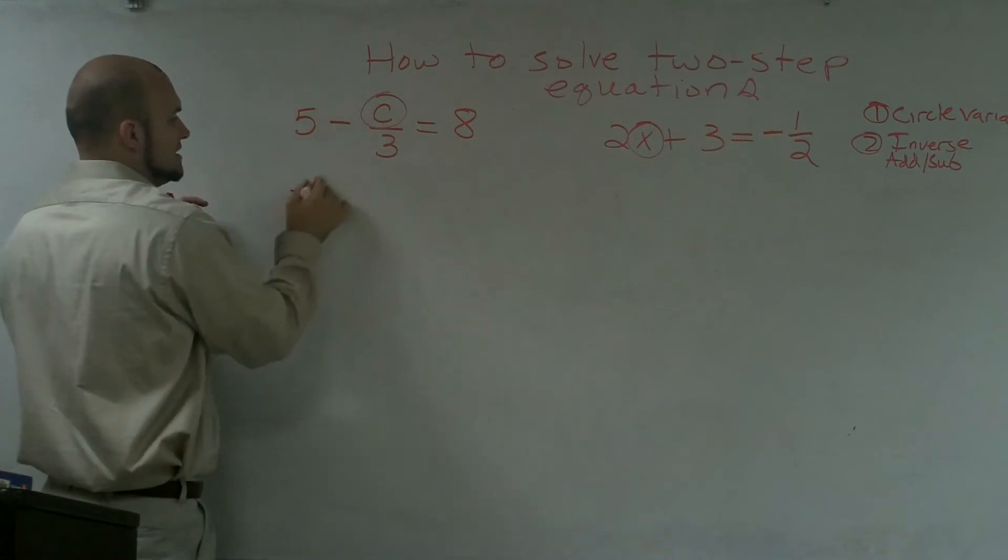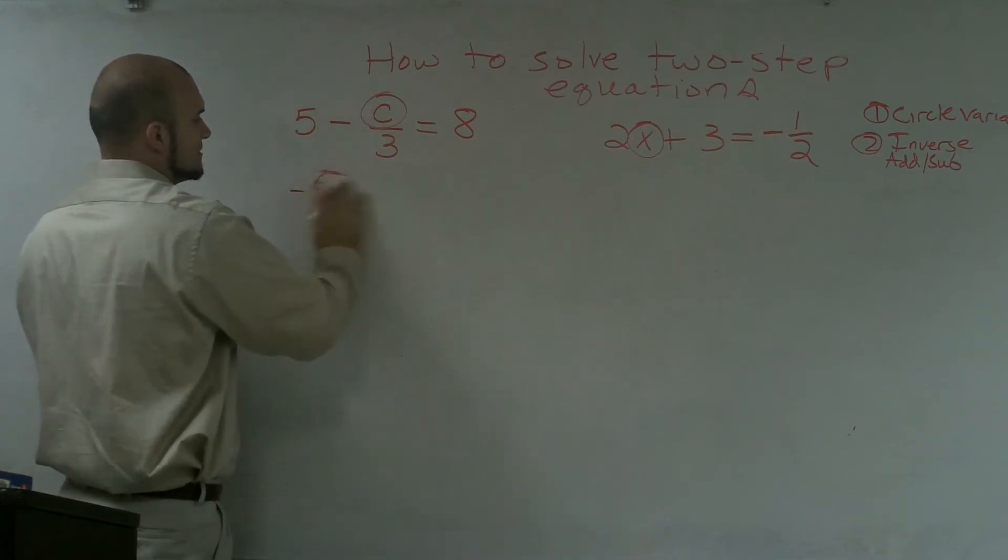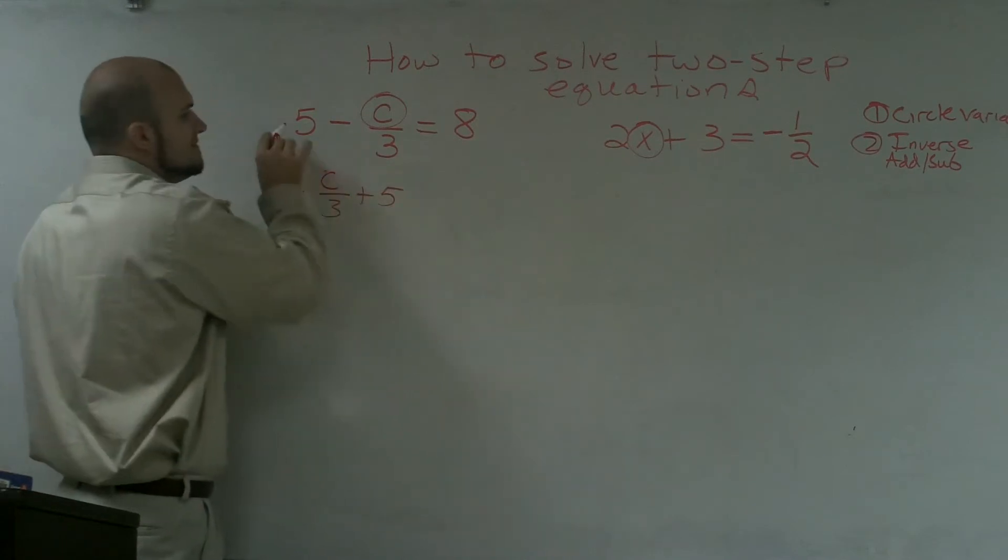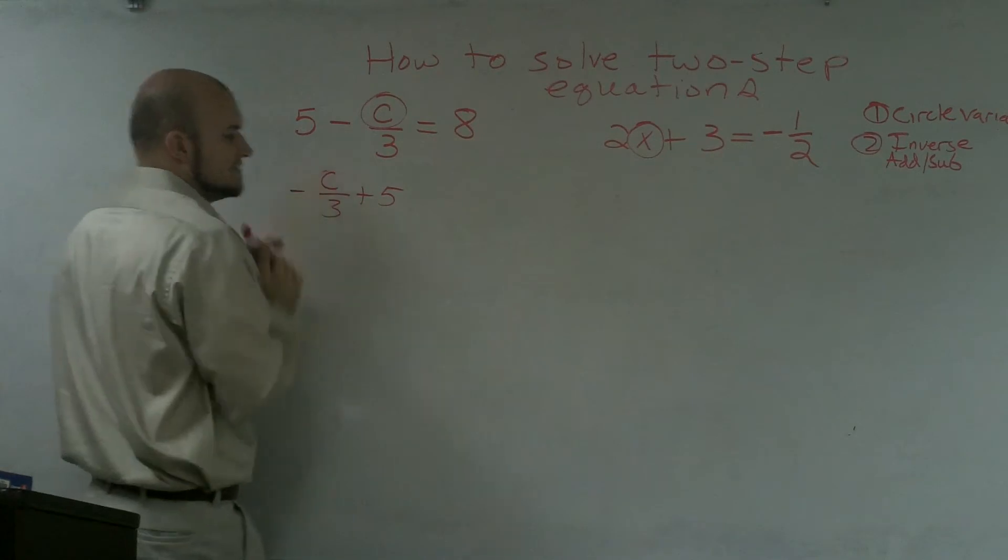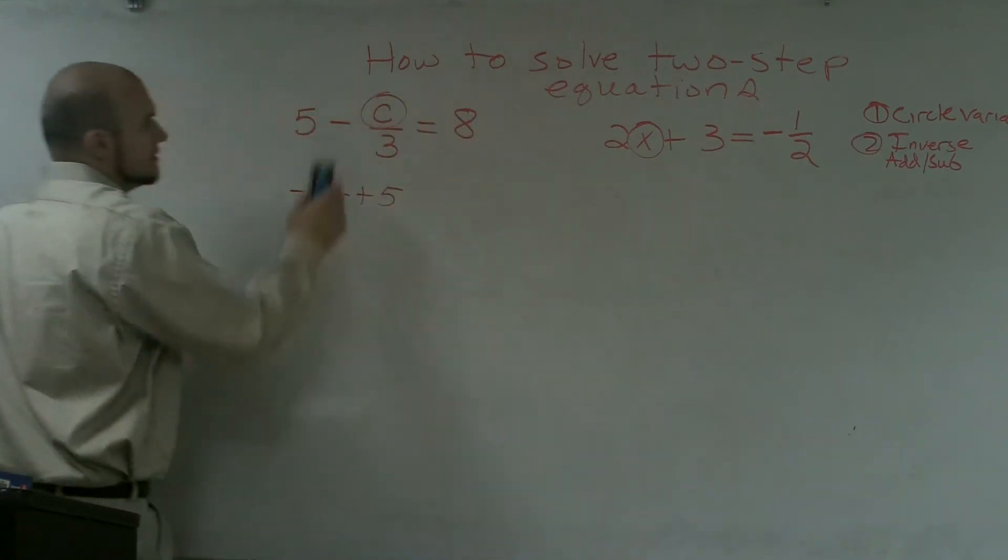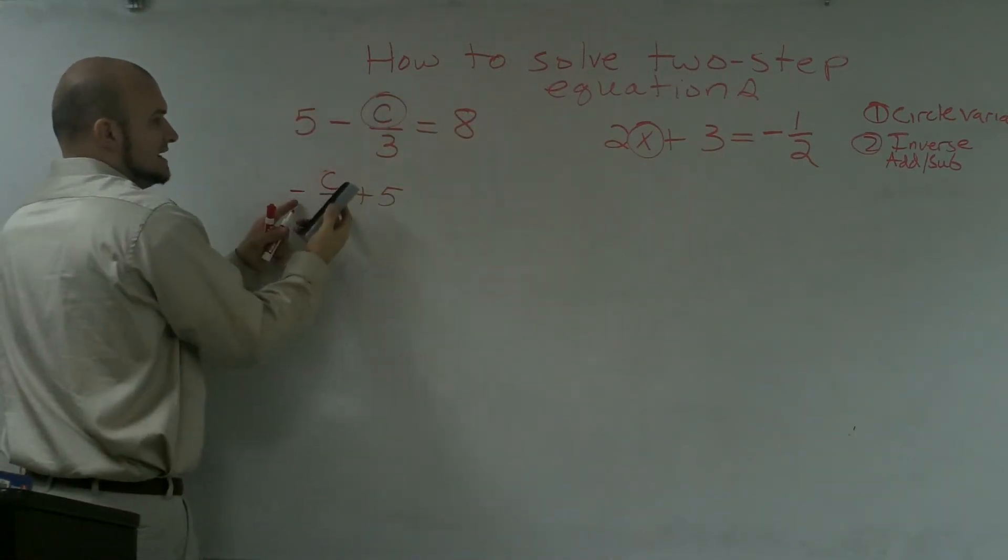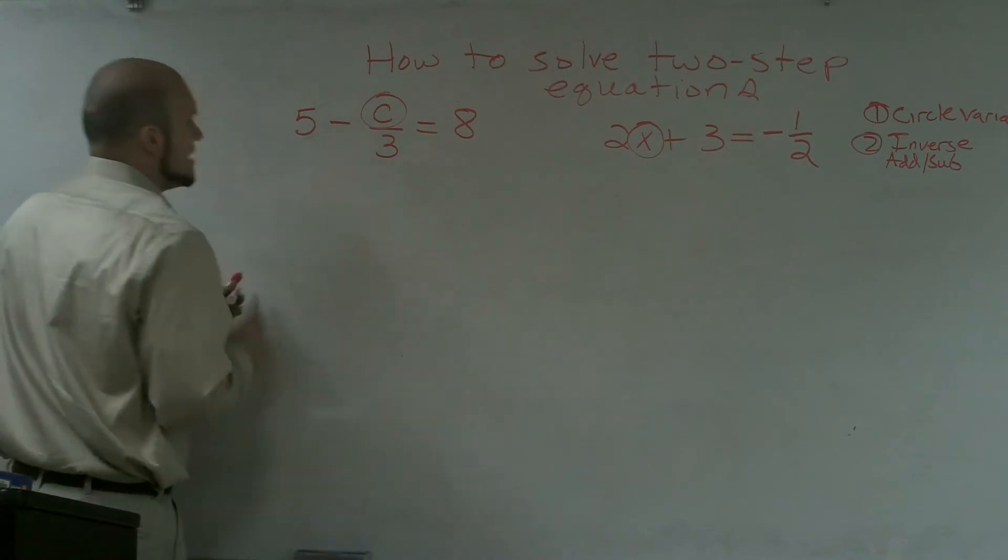And if I was to rewrite this, it would actually be c over 3 plus 5. That 5 is positive. So therefore, I actually need to subtract this 5 on both sides. Take note, that c is negative. So you actually need to subtract the 5.